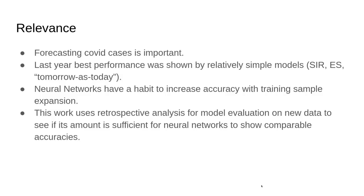Last year, the best models that showed the best accuracy during retrospective testing on history samples were SEER and exponential smoothing, which are simple. SEER is a modeling approach, but it is therefore a simple model which doesn't require a large training sample — actually doesn't require any. Neural networks, therefore, showed quite bad accuracy last year because of lack of training samples.